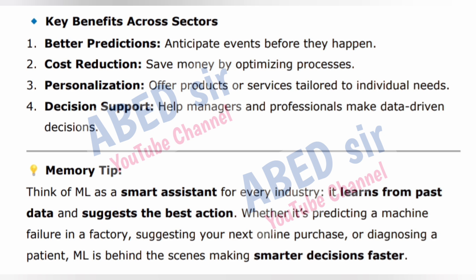Key benefits across sectors: 1. Better predictions — anticipate events before they happen. 2. Cost reduction — save money by optimizing processes. 3. Personalization — offer products or services tailored to individual needs. 4. Decision support — help managers and professionals make data-driven decisions. Memory tip: Think of ML as a smart assistant for every industry — it learns from past data and suggests the best action, whether it's predicting a machine failure in a factory, suggesting your next online purchase, or diagnosing a patient.